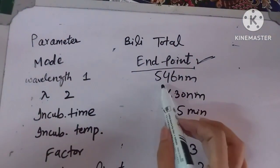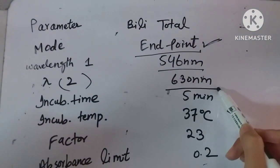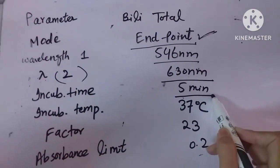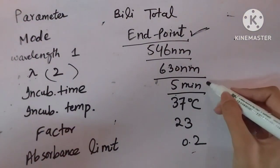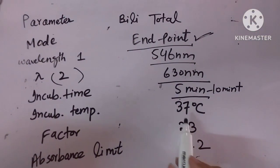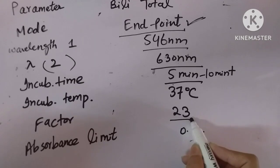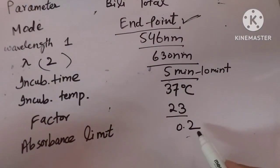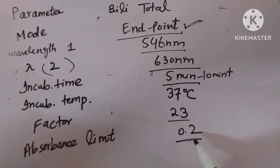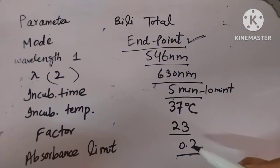The wavelength is 546 nm as the first wavelength and 630 nm as the second wavelength. The incubation time is 5 to 10 minutes after adding all reagents, at an incubation temperature of 37 degrees Celsius. The factor is 23, which we feed into the machine. The absorbance limit is 0.2 — the machine can show absorbance up to this limit. We set all these parameters in the machine before performing the test.